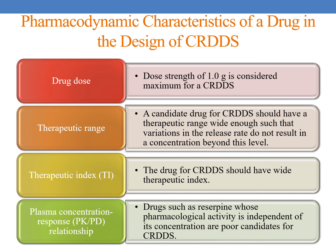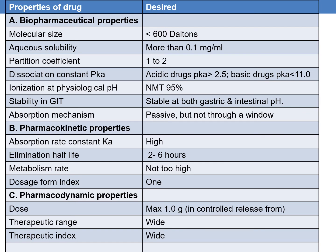The plasma concentration and pharmacodynamic response should be related; only in such cases can we formulate a controlled release drug delivery system. Drugs such as reserpine, whose pharmacological activity is independent of concentration, are poor candidates. Now, let us briefly discuss the overall summary. We have discussed biopharmaceutical properties, pharmacokinetic properties, and pharmacodynamic properties — these are the properties of the drug and these are the desired features.